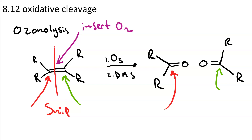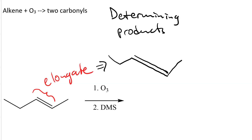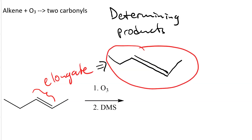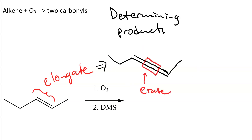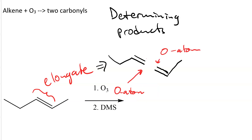Given an alkene treated with ozone followed by DMS, you want to determine the products. The easiest way to do that is to redraw the alkene elongating the double bond. The next thing you want to do is erase the center of that double bond to make room for our two oxygen atoms. Then insert an oxygen atom into each spot where we erased, so that we now have a carbonyl here and here.